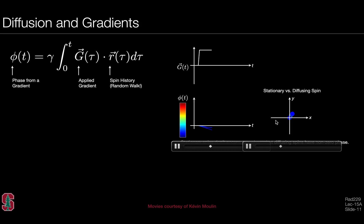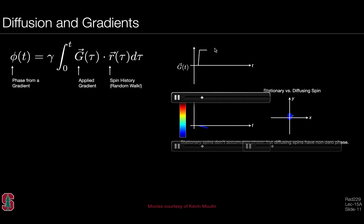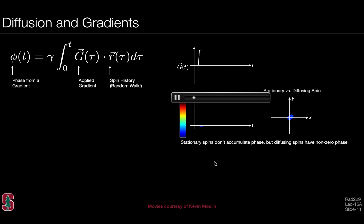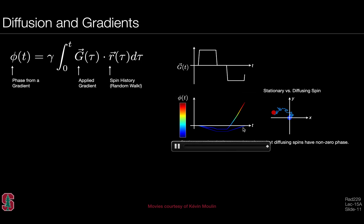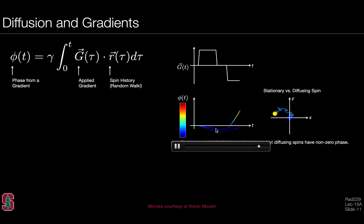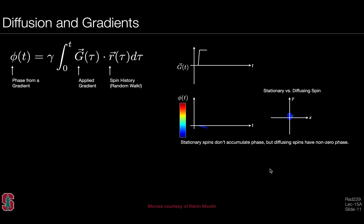Comparing a stationary spin at isocenter with a diffusing spin undergoing a 2D random walk: if we play a bipolar gradient — a large positive waveform followed by a large negative waveform — the stationary spin accumulates phase during the first gradient, holds it in between, and the second gradient fully undoes that phase. The diffusing spin, however, accumulates a net phase because it is unlikely to retrace an identical path, so diffusing spins will have a non-zero net phase while stationary spins will not.